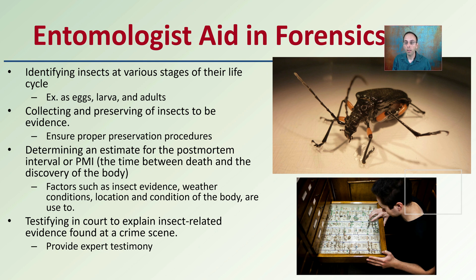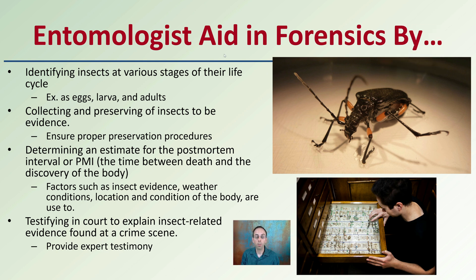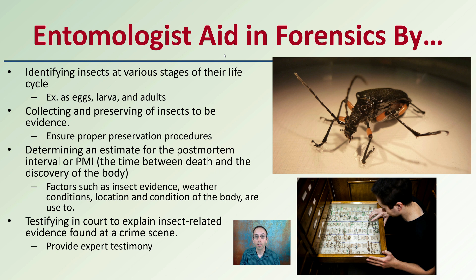Entomologists aid in this process by identifying insects in the various stages of their life cycle — not only knowing what insects are present, but whether they are in the egg stage, the larval stage, or present as adults. By collecting and preserving insects as evidence with proper preservation procedures, they can help determine the estimate of postmortem interval, or PMI — the time between death and the discovery of the body — which can help provide an approximation for where further investigation should be focused.